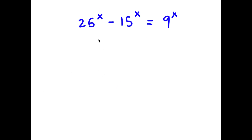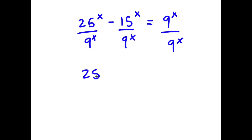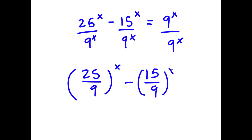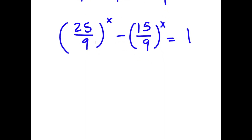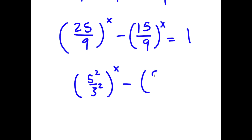In this problem I have 25 to the power of x minus 15 to the power of x is equal to 9 to the power of x. I'm going to divide all terms by 9^x, giving (25/9)^x minus (15/9)^x is equal to 1. I can rewrite 25/9 as (5/3) squared and 15/9 simplifies to 5/3.